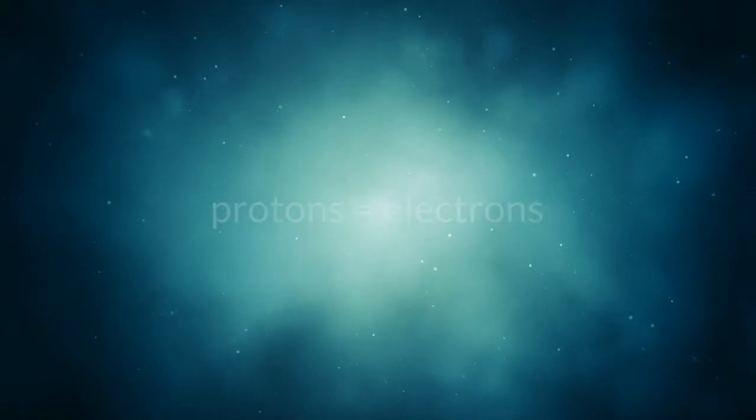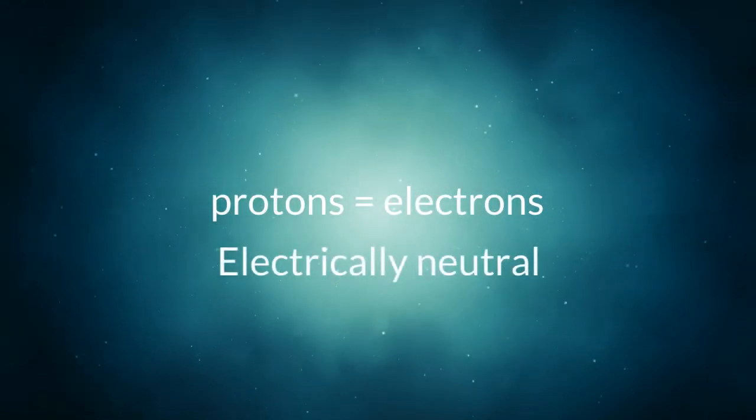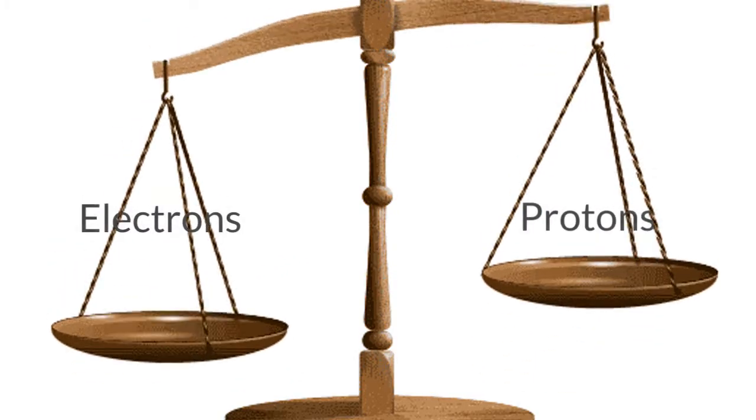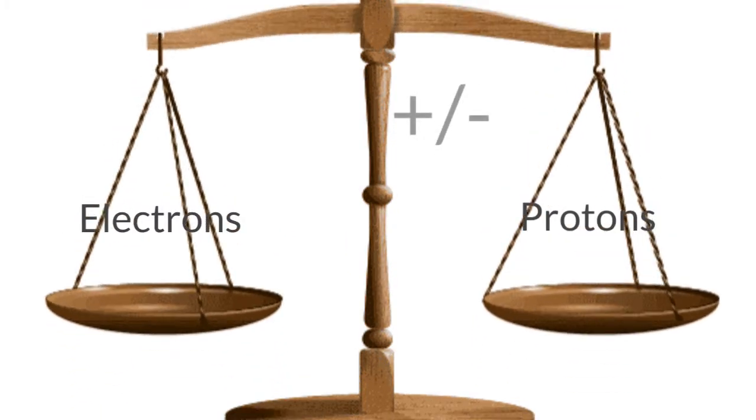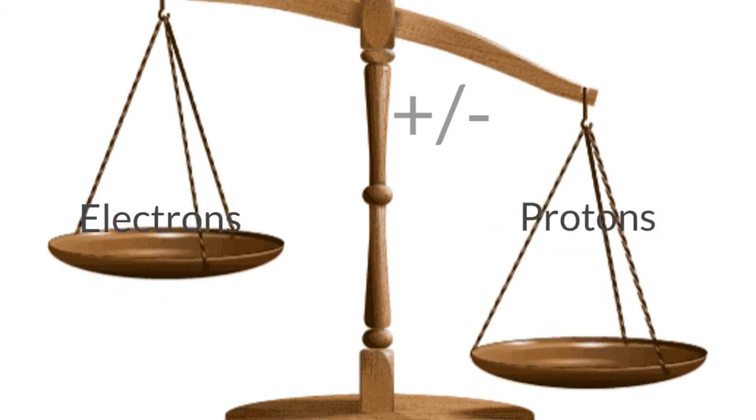If the number of protons and electrons are equal, then the atom is electrically neutral. If the atom has more electrons or fewer electrons than protons, then it has an overall negative or positive charge, respectively.